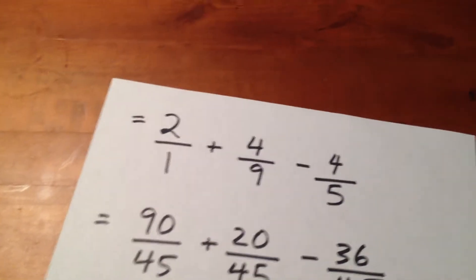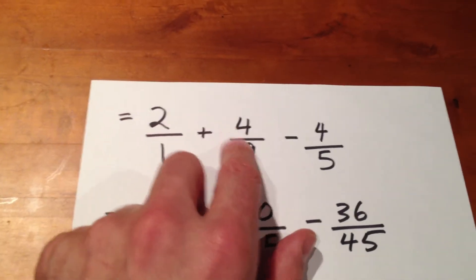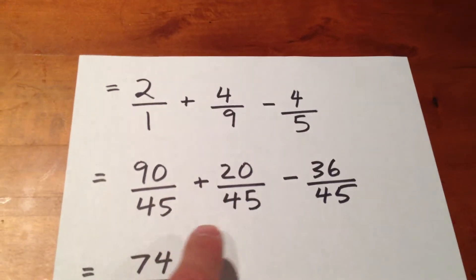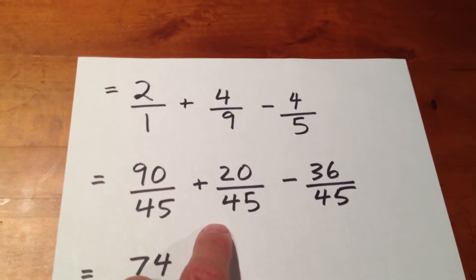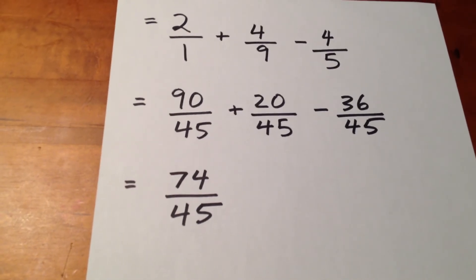So we end up with 2, which is 2 over 1, 2 squared over 3 squared, which is 4 over 9, and 4 fifths. We find our common denominator of 45, and we add. And our final answer is 74 over 45.